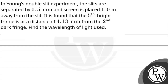Let's read this question. In Young's double slit experiment, the slits are separated by 0.5 mm and the screen is placed 1 meter away from the slit. It is found that the 5th bright fringe is at a distance of 4.13 mm from the 2nd dark fringe. Find the wavelength of the light used.